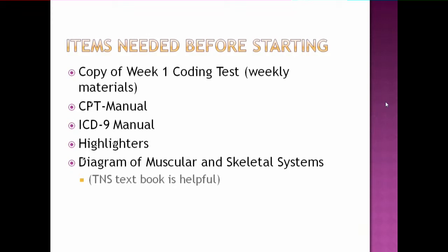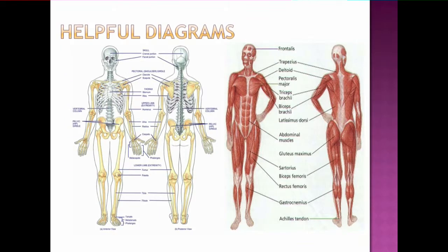You will also need highlighters. It is important to highlight the important things throughout the case as you are abstracting information. You will also need a diagram of the musculoskeletal system in case you are seeing terms or anatomy that you are not familiar with. One diagram is of the musculoskeletal system and the other is the skeletal system. They are two separate systems but we code them as one, so you will have to pull two diagrams.